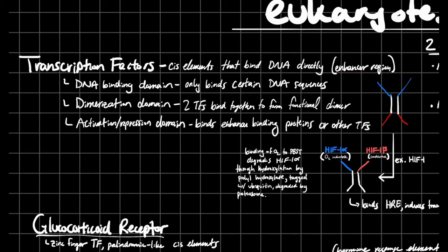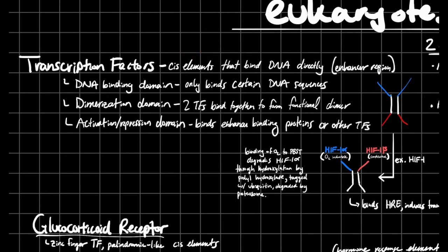You might be wondering what cis elements are, and if there's a cis, is there a trans? Cis elements bind to the DNA directly to induce an effect. Trans elements, on the other hand, do not bind to the DNA directly, but they still affect gene regulation and transcription. Trans elements are going to bind to cis elements and affect how they do their job.